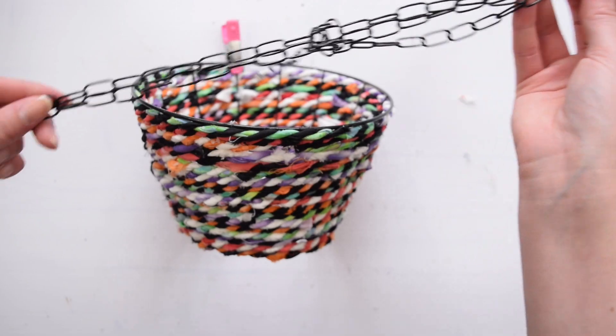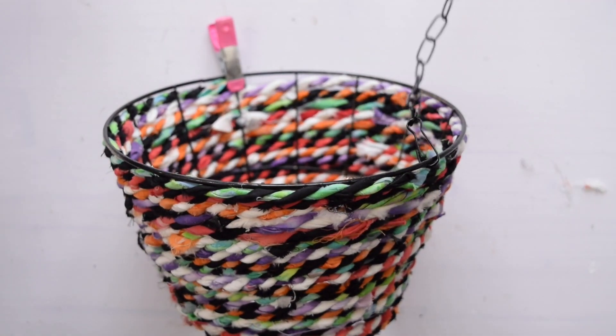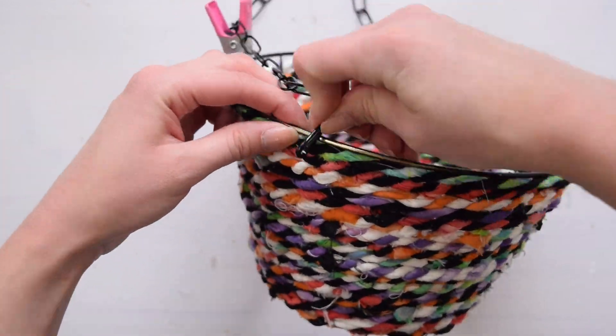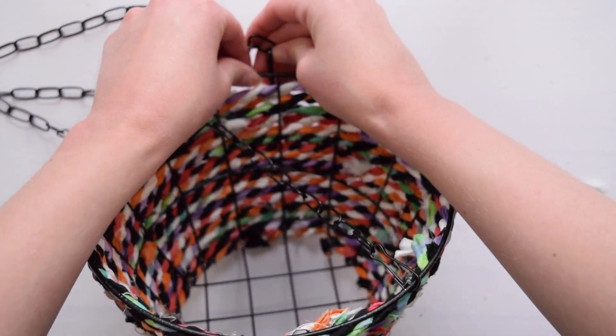I secured the end in place and then I'm going to use one of these little chain hooks that actually came off those Dollar Tree wire hanging planter baskets. I've been saving these in my stash and I just clip that on to the different sides of the basket and that completes this hanging planter.